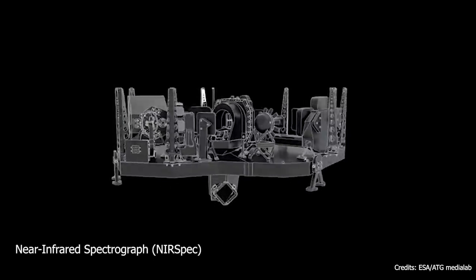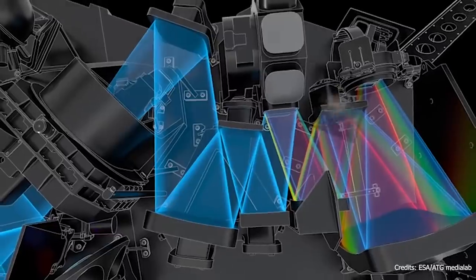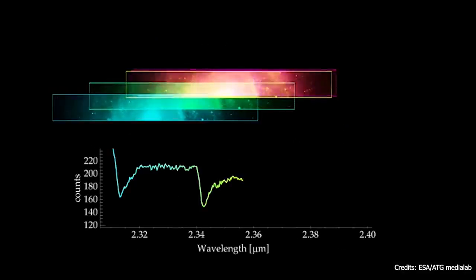The second instrument is the near-infrared spectrograph, or NIRSpec, which can analyze the spectra of more than 100 objects in one field of view.